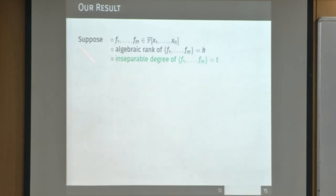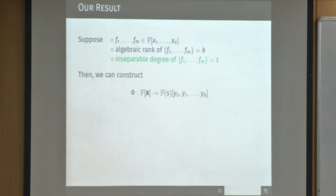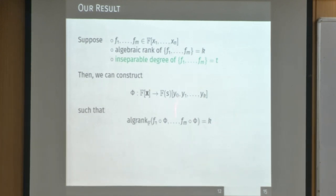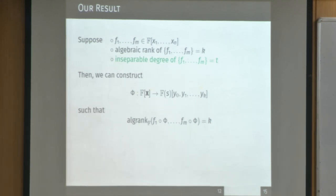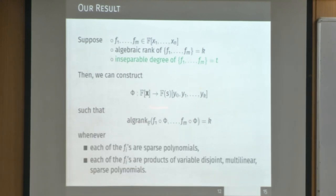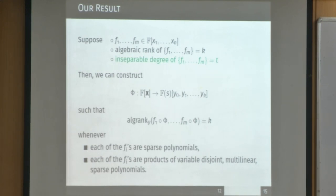We can now state our result. Given a set of polynomials whose algebraic rank is K and inseparable degree is T, we can construct a faithful map — or family of faithful maps — with a new variable S, such that the algebraic rank after substitution equals K. The difference from the characteristic zero setting is that there the faithful map preserved rank even over F(S), whereas here we preserve the rank over F. For PIT applications, this is sufficient. For some structured families of polynomials F, we can give such faithful maps and apply them to PIT.